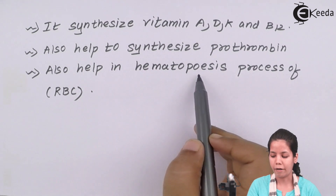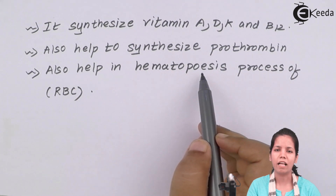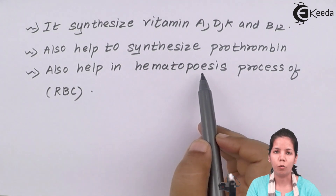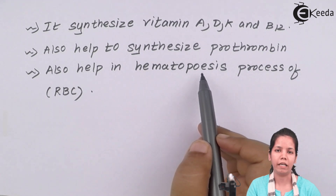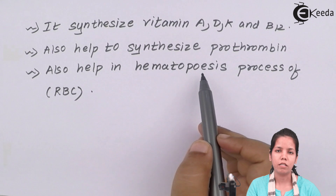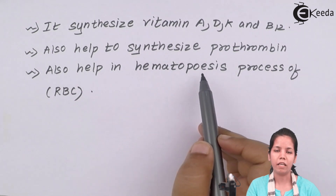The liver also helps in the hematopoiesis process. Hematopoiesis is the synthesis of red blood cells (RBCs). We all know that RBCs die after 120 days, which is their lifespan. Hematopoiesis is the process required for the regeneration or production of new RBCs.